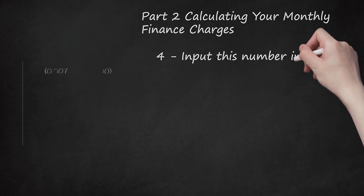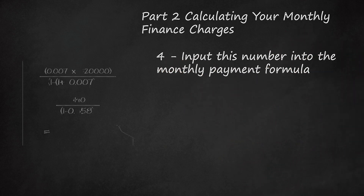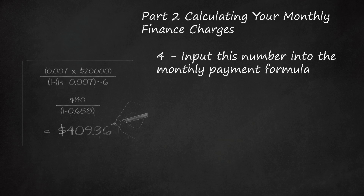Step 4: Input this number into the monthly payment formula. The formula is as follows: Monthly payment = (interest rate due on each payment × principal) ÷ (1 − (1 + interest rate due on each payment) ^ −number of payments). The top part of the equation, interest rate × principal, is your number from the previous step. The caret (^) indicates an exponent. On a calculator, enter 1 plus the interest rate, hit the x^y button, then enter the number of payments as a negative value.